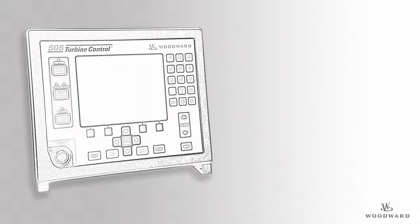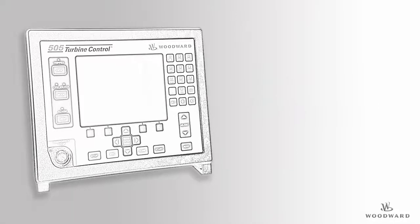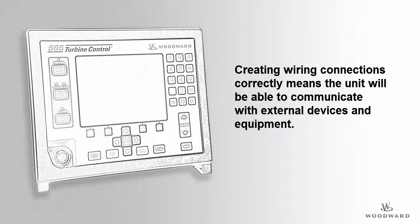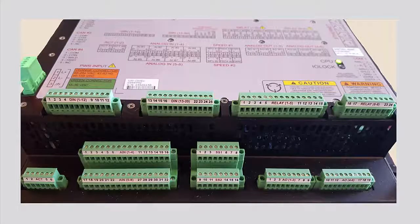In this tutorial we will review wiring connections for discrete signal inputs and outputs. It is important to gain a clear understanding of how to make wiring connections correctly because the unit will not be able to communicate with external devices and equipment if it isn't wired properly. All wiring in this section will be wired to the terminal blocks of the controller.